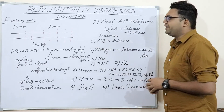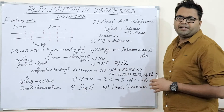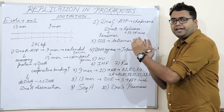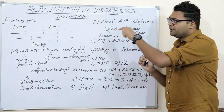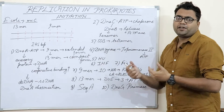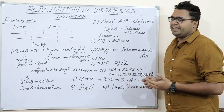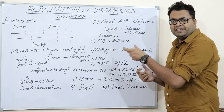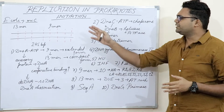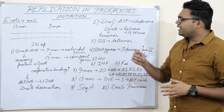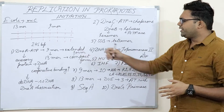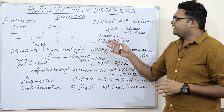How does replication begin? It cannot begin from any specific DNA sequence — there has to be a very specific DNA sequence to which initiator proteins can bind and thereby commence the process of DNA replication. That specific DNA sequence present in E. coli is known as the origin of replication. The origin of replication in E. coli spans 245 base pairs.